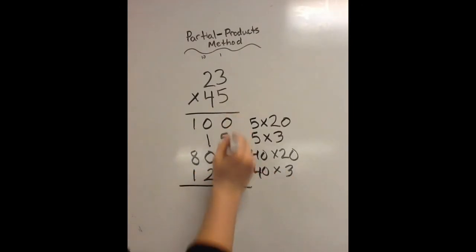Again, this becomes a big addition problem. 5, 3, 8 plus 1 is 9, plus another is 10. And again, you get your answer, 1,035.